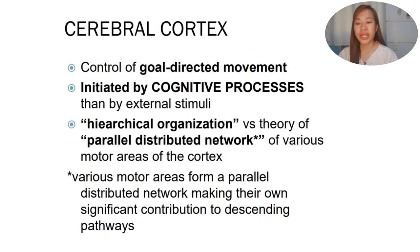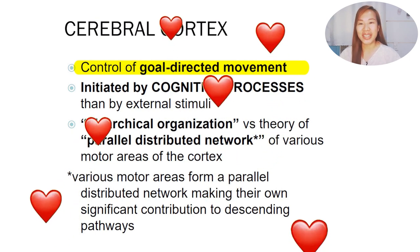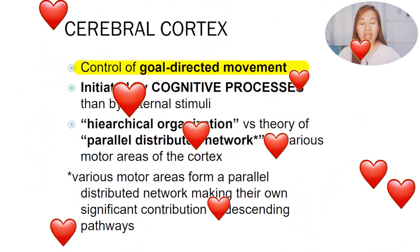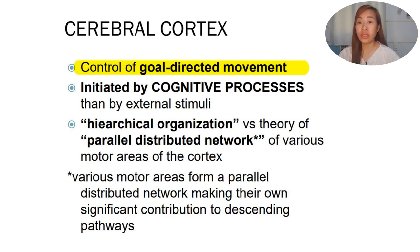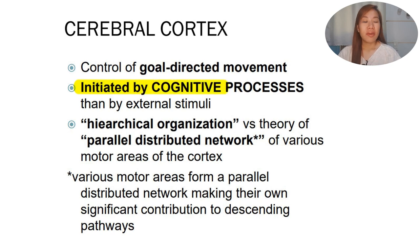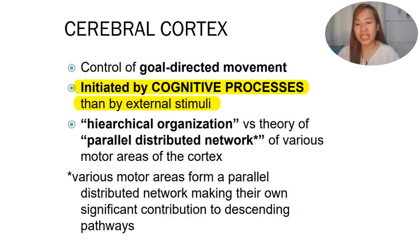The cerebral cortex is the control of goal-directed movement, meaning it's voluntary - you really want to do something. For example, if you want to get a glass of water, kiss someone, or hug someone - these are goal-directed movements. It is initiated by cognitive processes rather than external stimuli. Unlike the stretch reflex, which is initiated by a painful external stimuli, these movements are initiated by cognitive processes, meaning we have to think about them.